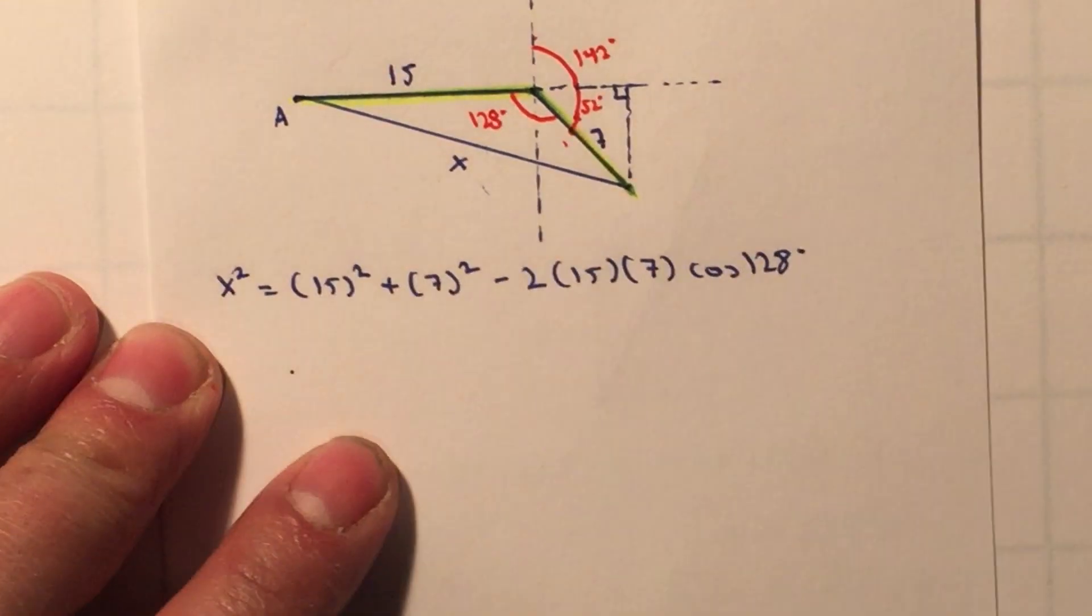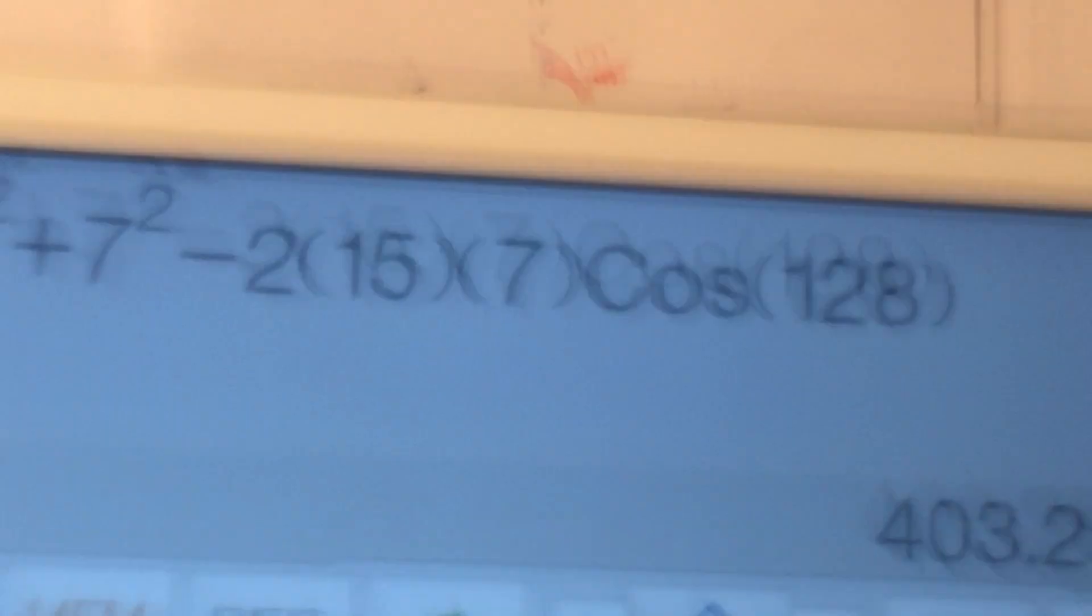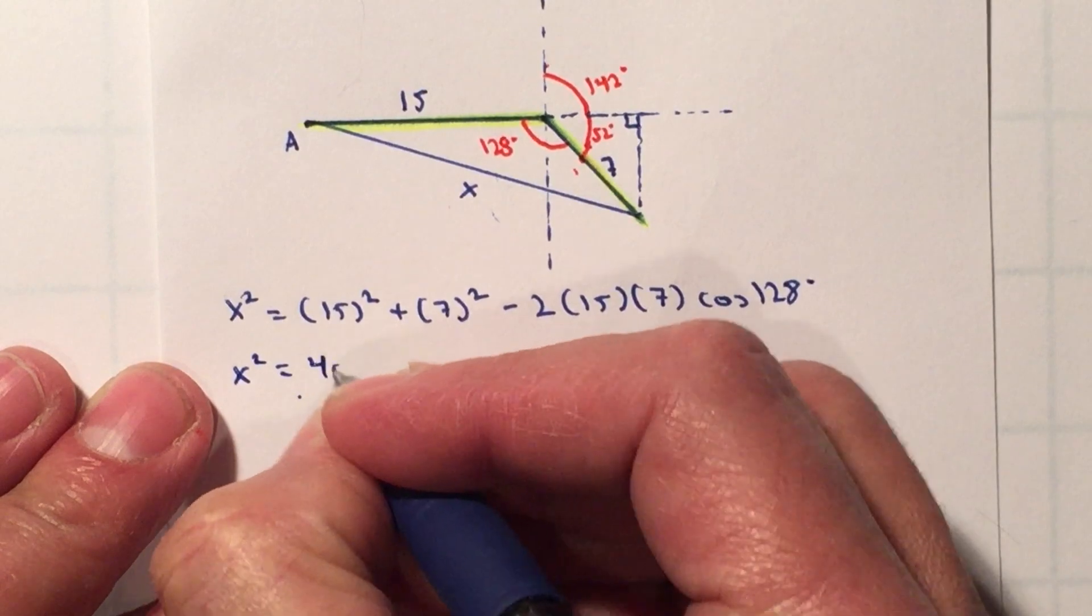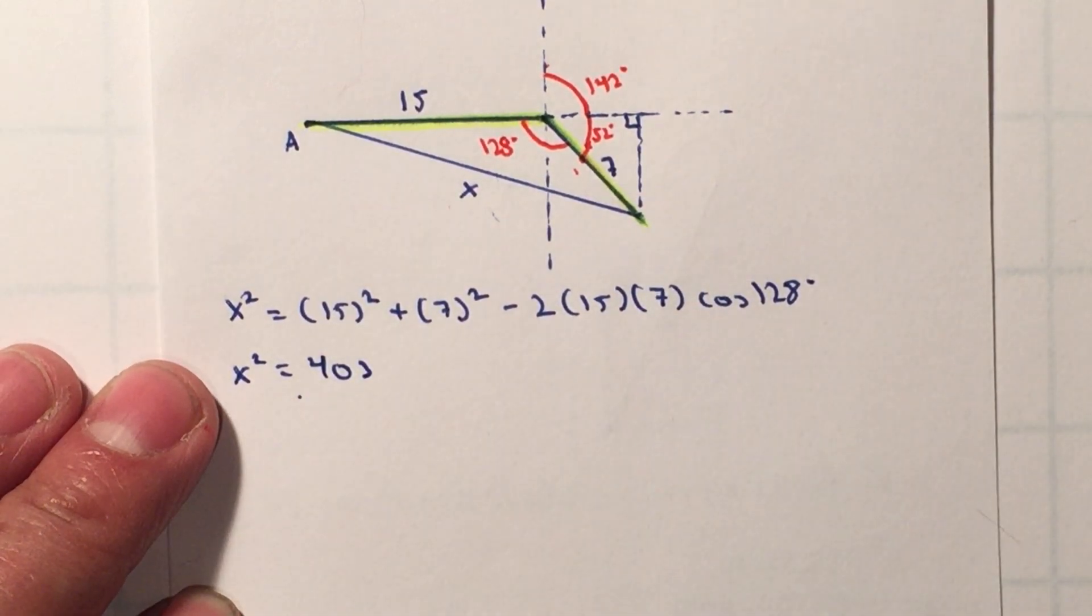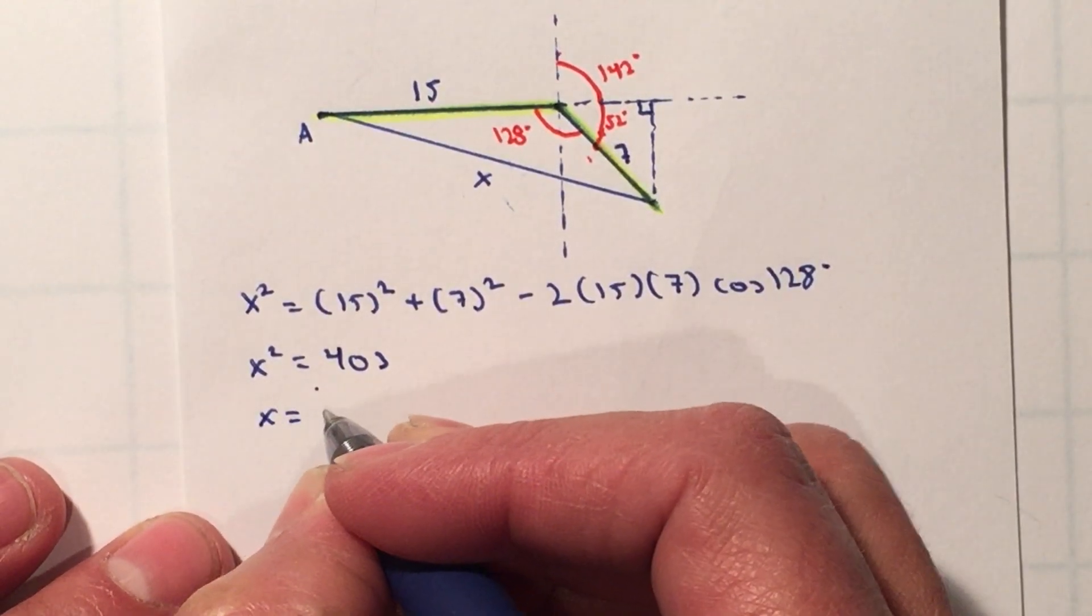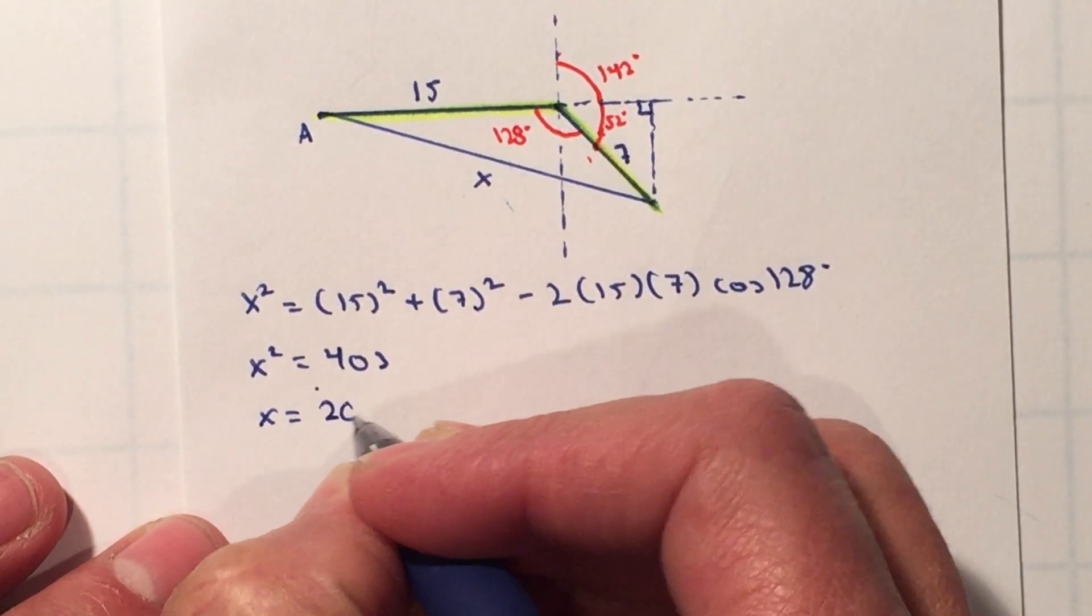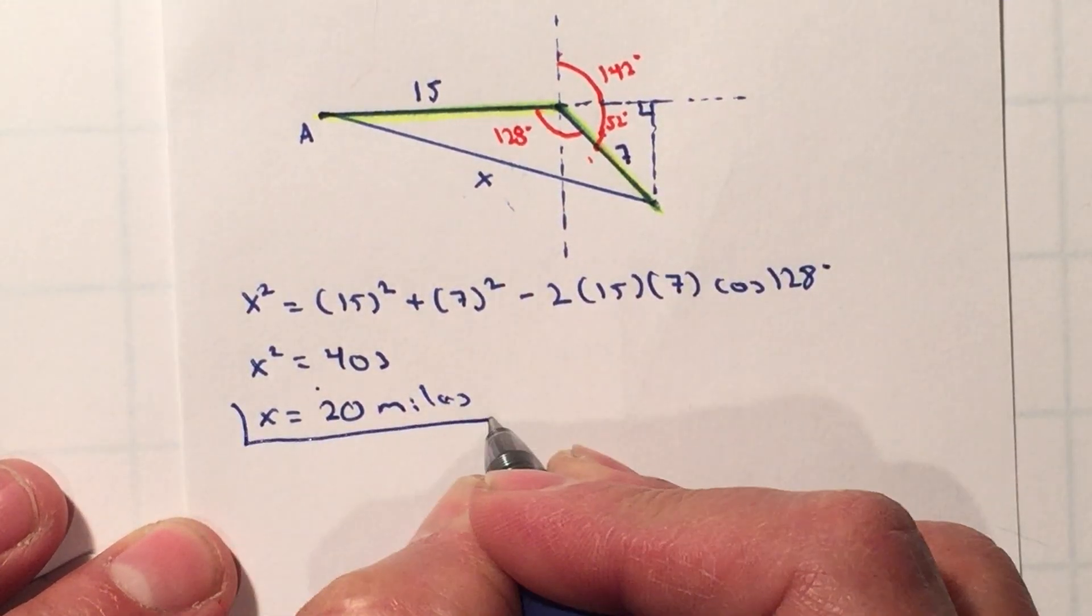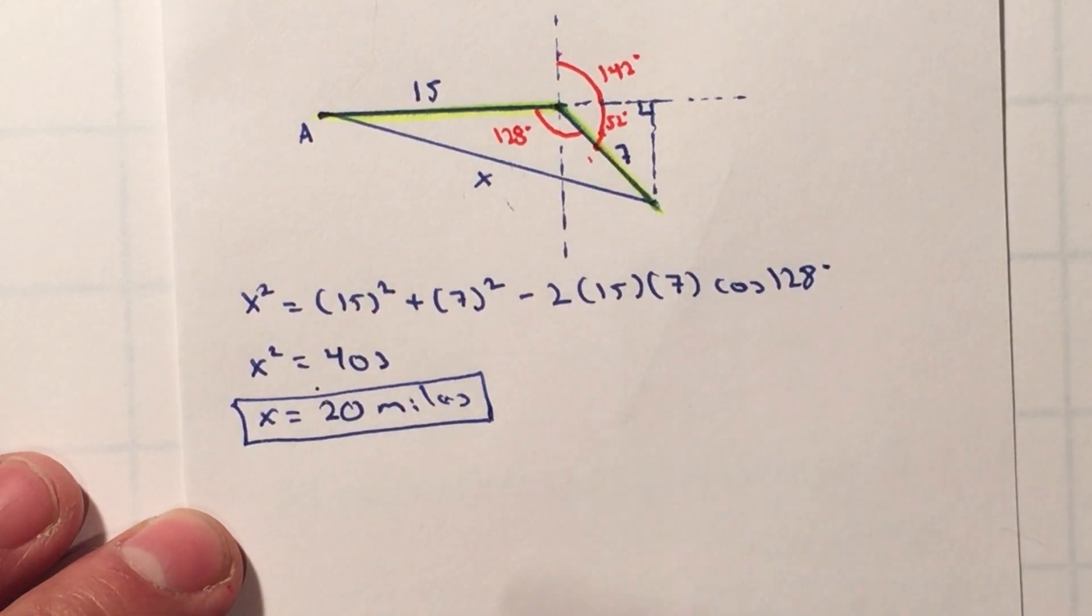And I'll get 403. So x² is equal to 403. I'm going to keep that in the calculator. I'm just going to take the square root of my answer. So therefore x is equal to 20.08. I'm just going to round it up to 20 miles since there are no decimal places. So therefore the plane is 20 miles away from its destination.